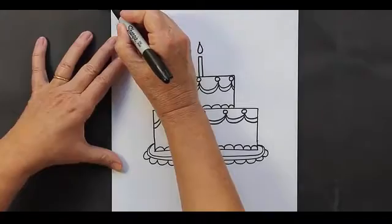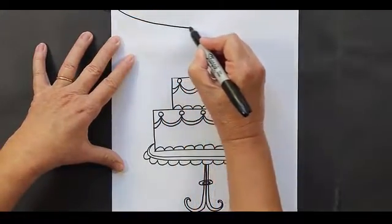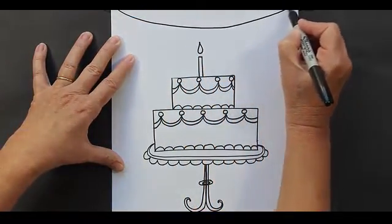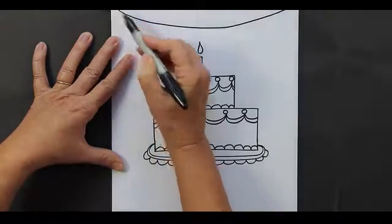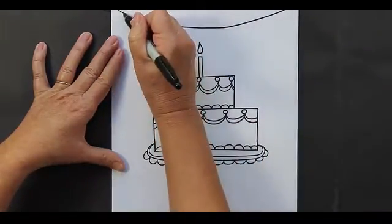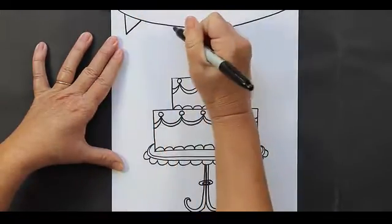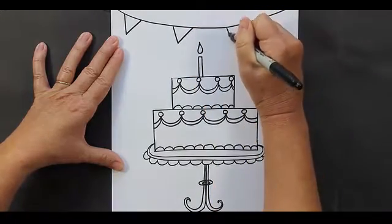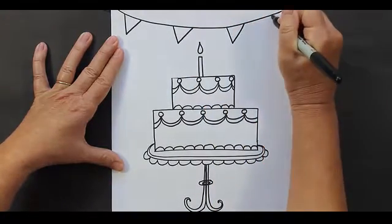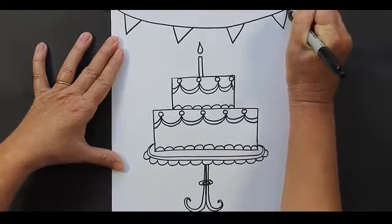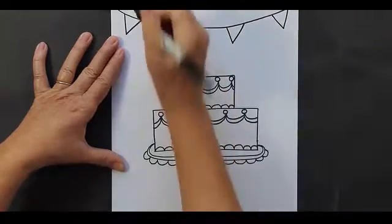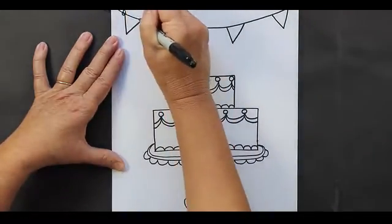Now we're going to go back up to the top, and we're going to make a banner. It's basically just a curved line from corner to corner, and then a few V's that are attached. Make as many as you'd like. We need to tie those V's onto the cord, onto the line.